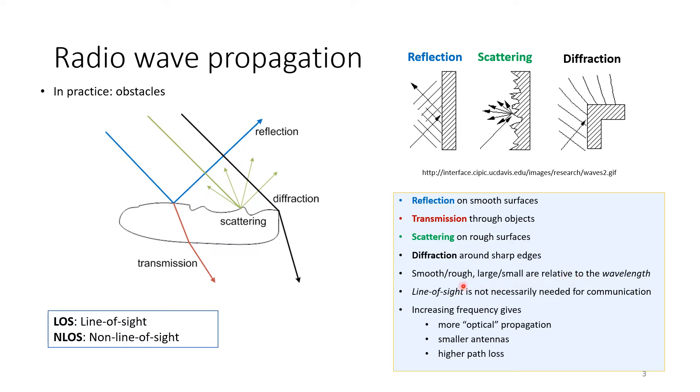We have loss or no loss. We have line of sight and non-line of sight. Line of sight means the receiver can see the transmitter without any obstacles. This is why line of sight is necessary for good communication, but it's not a must. We can still get transmission or other paths, so line of sight is not necessary for communication.